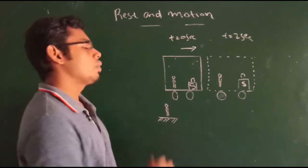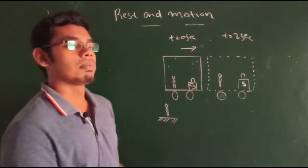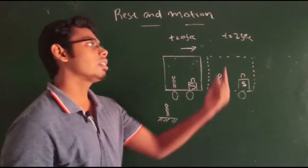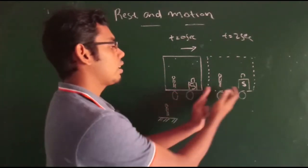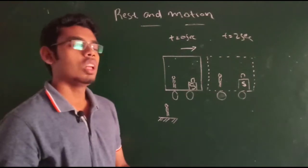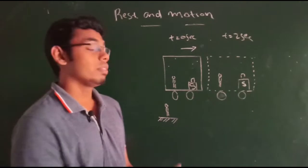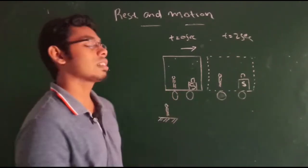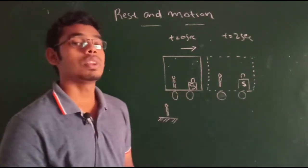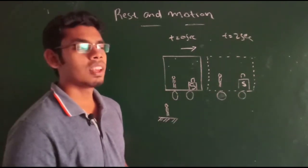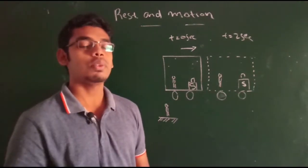With respect to the passenger standing inside the bus, he sees the suitcase near to him at t equals zero seconds. Similarly, at t equals two seconds, the distance between the passenger and the suitcase is not changing — it remains the same. So with respect to the passenger inside the bus, the suitcase is not moving. We say the suitcase is in the state of rest with respect to the passenger.